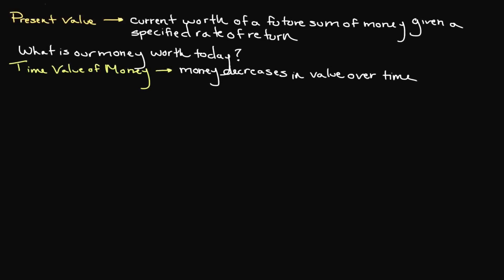This is due to a number of different reasons, including inflation and opportunity costs. So in order to make an accurate assessment, we engage in this process of discounting, which means we reduce the value of a future sum of money to account for the time value of money and determine its equivalent worth today.